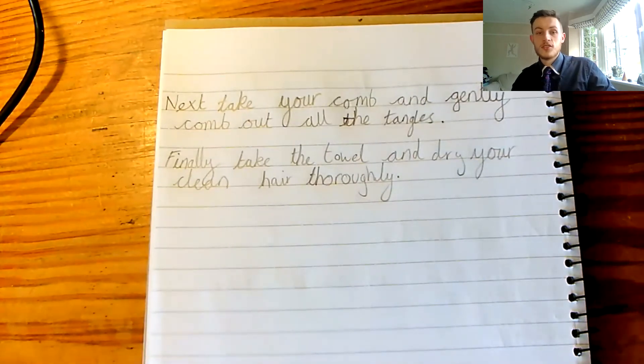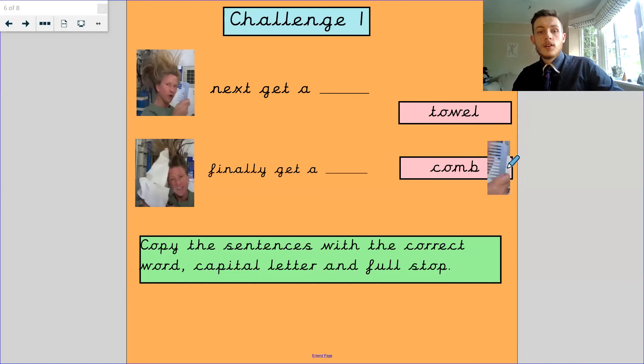Let me take you back to the challenge. Let's move over to our other screen. Here we are. Challenge one. Next, get a towel or comb. Finally, get a. I want you to copy the sentence out and write the correct word in here with a capital letter and a full stop for each sentence.